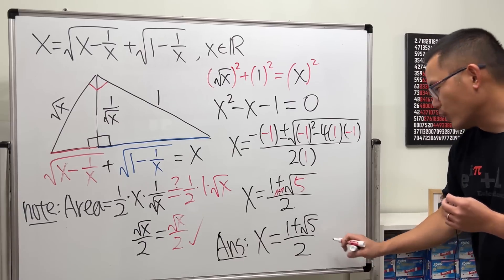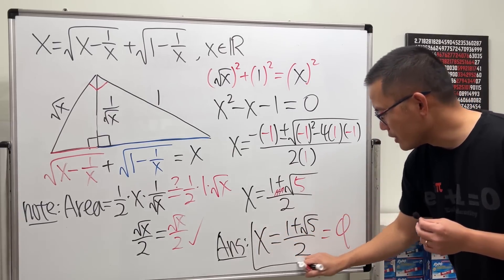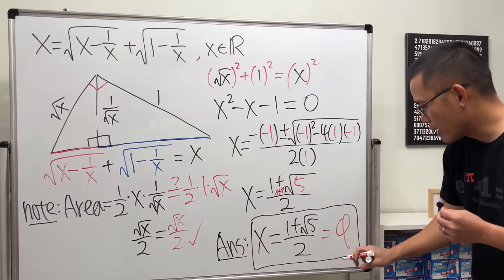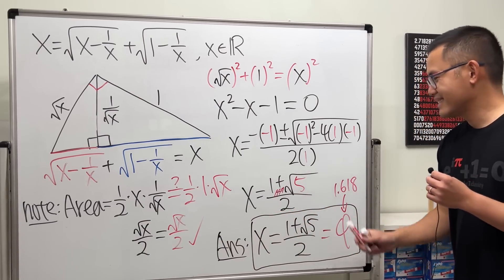But if you want to be even cooler than this, just write φ. That's the symbol for the golden ratio, which is approximately 1.618. Yeah, that's it!